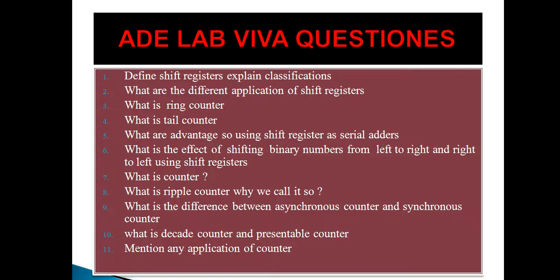The classifications of shift registers are SISO, SIPO, PISO, and PIPO. SISO is Serial In Serial Out, SIPO is Serial In Parallel Out, PISO is Parallel In Serial Out, and PIPO is Parallel In Parallel Out.